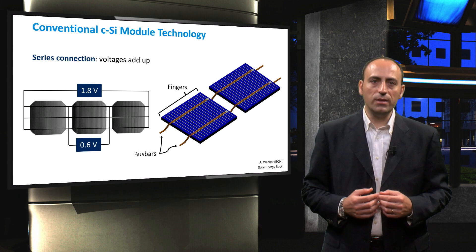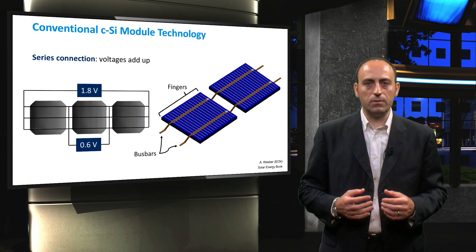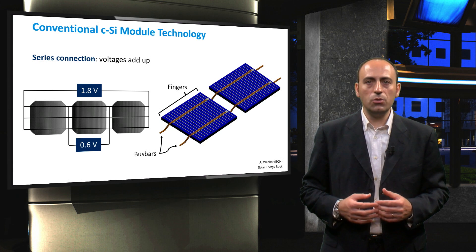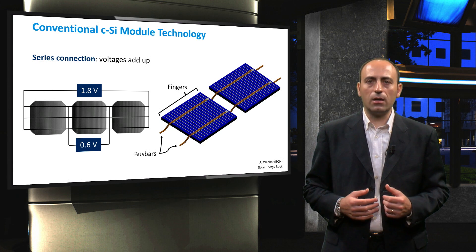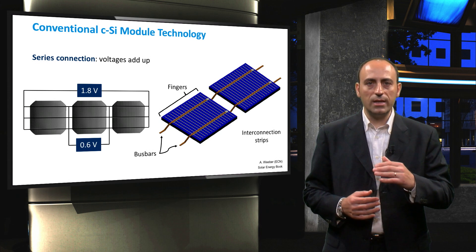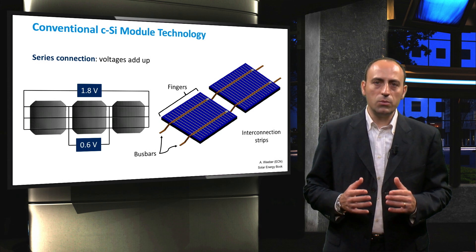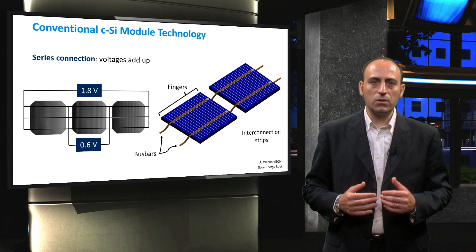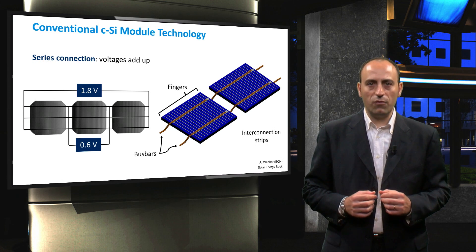On top of the H grid, it is possible to solder the so-called tabs. This is usually done using a less noble material, like copper. These tabs are thin interconnection strips that connect the front side of one cell to the back side of the next cell. In this way, the series connection between the crystalline silicon cells is performed.